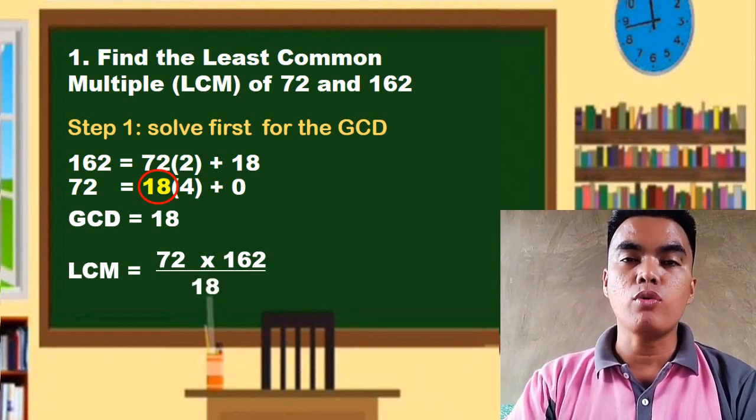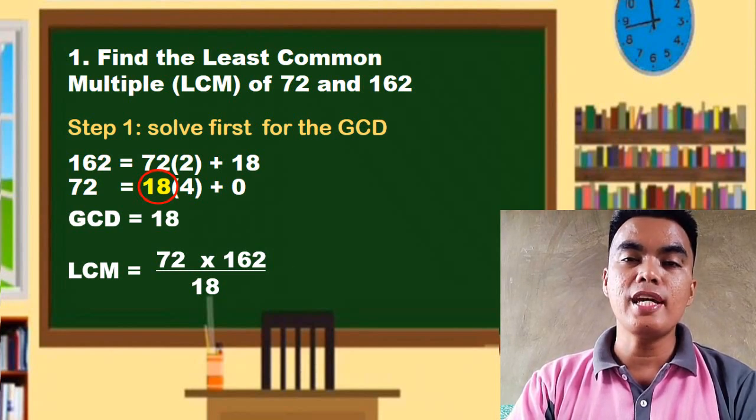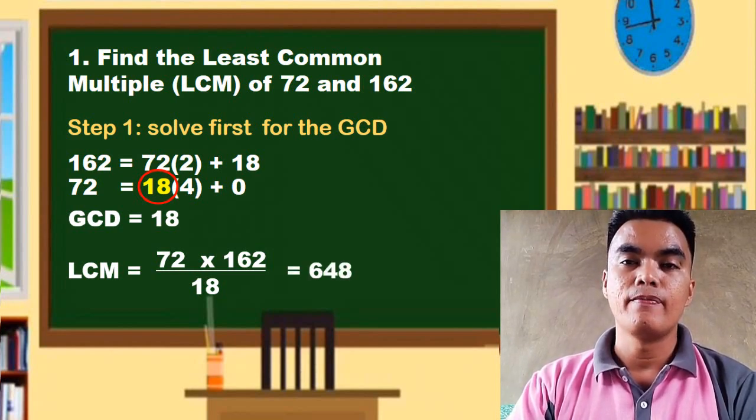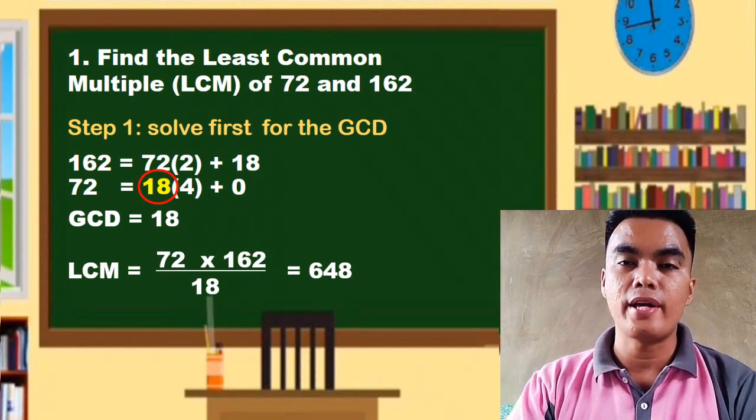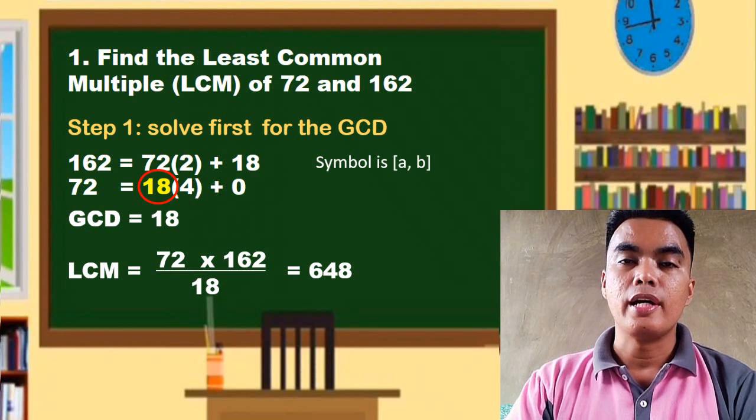GCD, which is equal to 18. So this is equal to 648, and this is our LCM and this is our answer. So the symbol for the LCM of these two numbers is this.